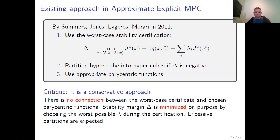Let's conclude with the existing approach in approximate explicit MPC, published by Summers, Jones, Lygeros, and Morari in 2011. They use the worst-case stability certification and partition each hypercube with negative delta into smaller hypercubes, using any appropriate barycentric functions. However, this is quite a conservative approach because there is no connection between the worst-case certificate used and the chosen barycentric functions — meaning you certify stability for any possible choice of barycentric functions, even for the worst one, but then only use one particular set. Excessive partitions are expected because the stability margin delta was minimized on purpose.